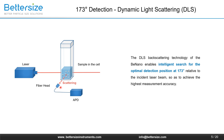Traditionally, the 90-degree detection is used in DLS analyzers. Now, an advanced optics 173-degree detection is utilized, and this novel design allows intelligent search for the optimal detection position. By moving the lens, the detection point can be set at any position from the center to the edge of the sample cell. This allows the detection of different types and concentrations of samples. The optimal detection position and laser intensity are determined intelligently for each specific sample according to its concentration, size, and scattering ability, achieving the highest measurement accuracy.